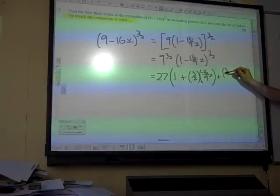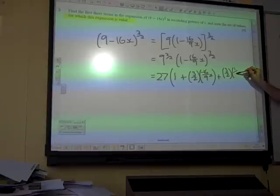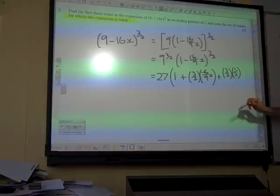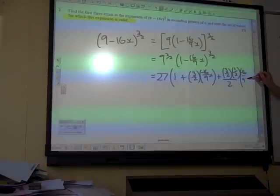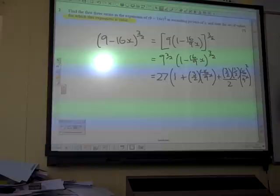3 over 2 times n minus 1.5, divided by 2, times minus 16 over 9x squared. And then the expansion would go on in that space.